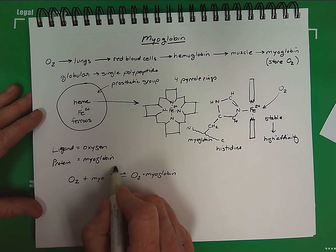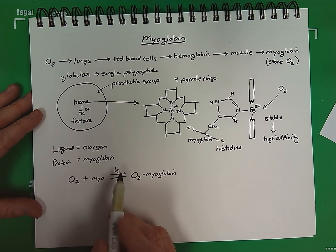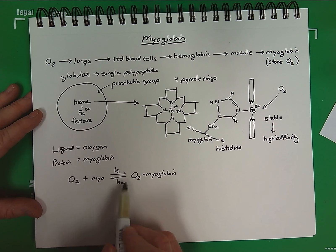So here's the substrates in our reaction. Here's our product forming. Of course, there are rates of association, k1, and rates of dissociation, k2.